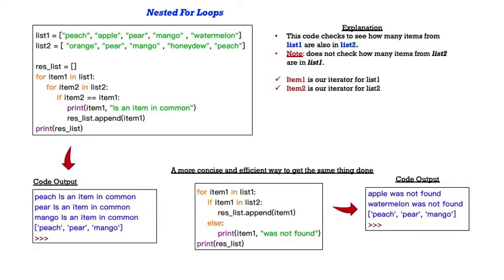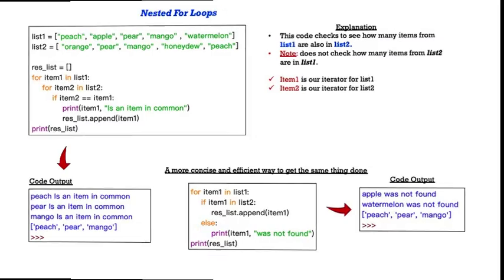Now a more concise and efficient way to get this done is to use a for loop and an if statement as follows. For item in list 1. For item 1 in list 1. And then if item 1 in list 2, append it. Else, print the item and tell me it wasn't found. Apple was not found, and watermelon was not found. But peach, pear, and mango were all found. So same result, just much more efficiently.